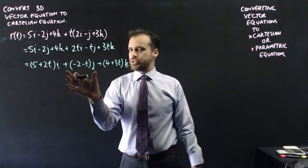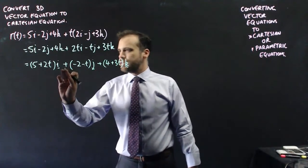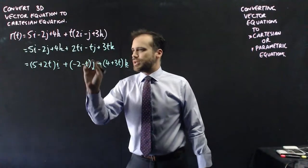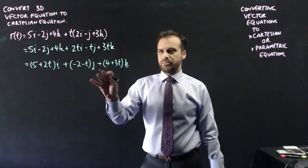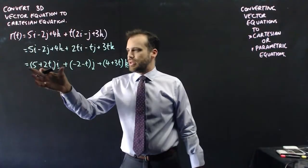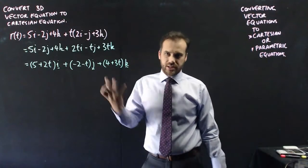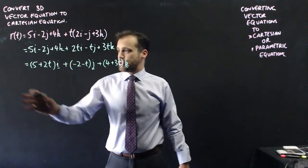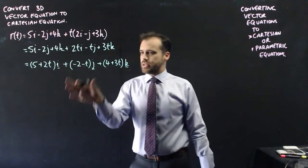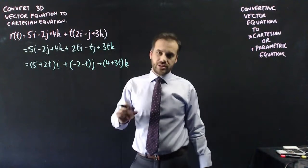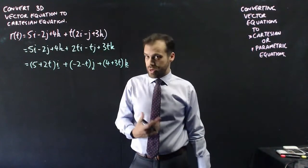Now, you need to be a little bit careful here. With this j component, I'm adding the negative 2, negative t of my j component here. It's easier if everything's added together, even if both of the things in the brackets are negative. Now I can say that the x-coordinate is this, the y-coordinate is this, and the z-coordinate is this. I'm creating parametric equations.